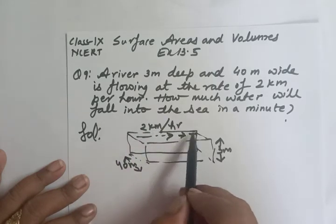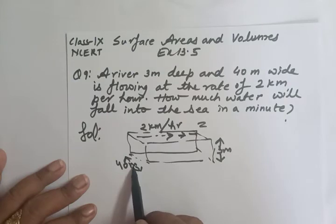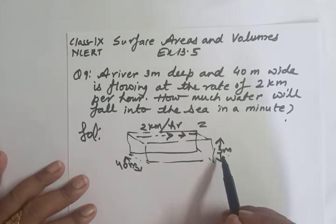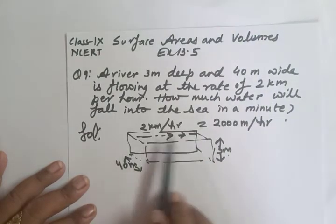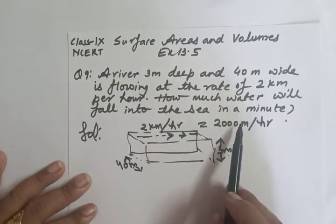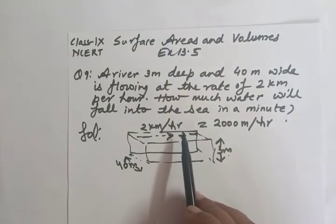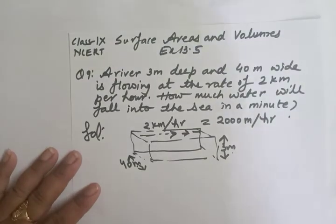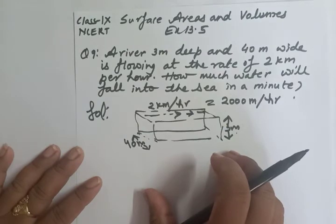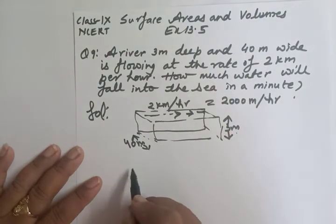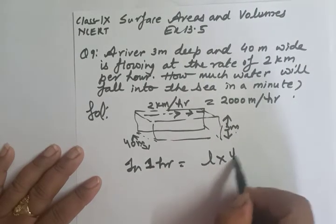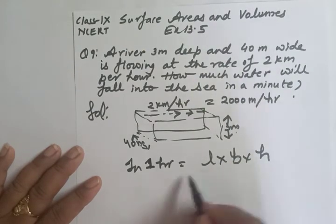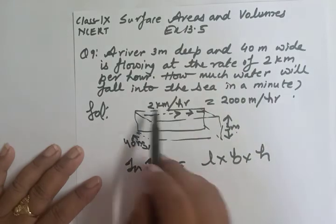Since the breadth and height are given in meters, we convert the speed: 2 km/hr = 2000 meters per hour, as 1 km = 1000 meters. Now we will find the capacity — i.e., how much water flows in 1 hour. The river is again of cuboid shape.